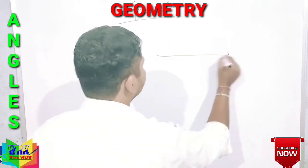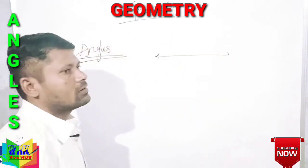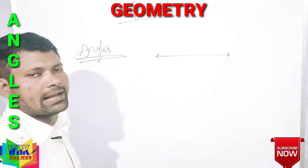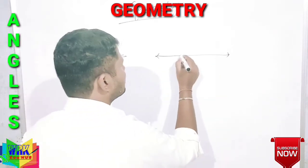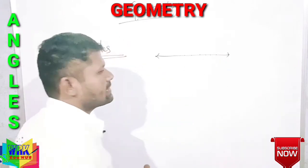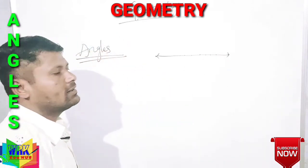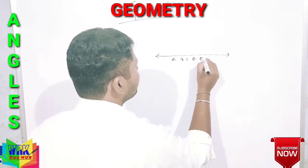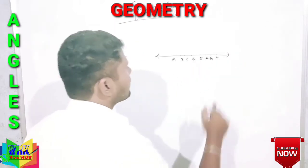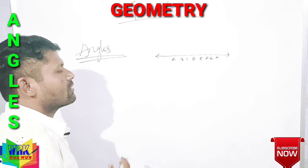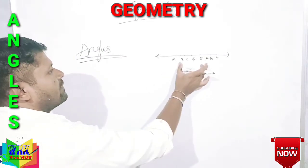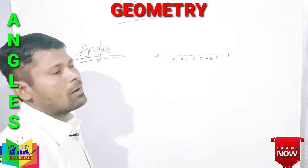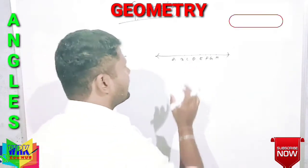First, a line has no endpoints. There are infinite number of points lying on a line. We define a line with a length but no width or no breadth.